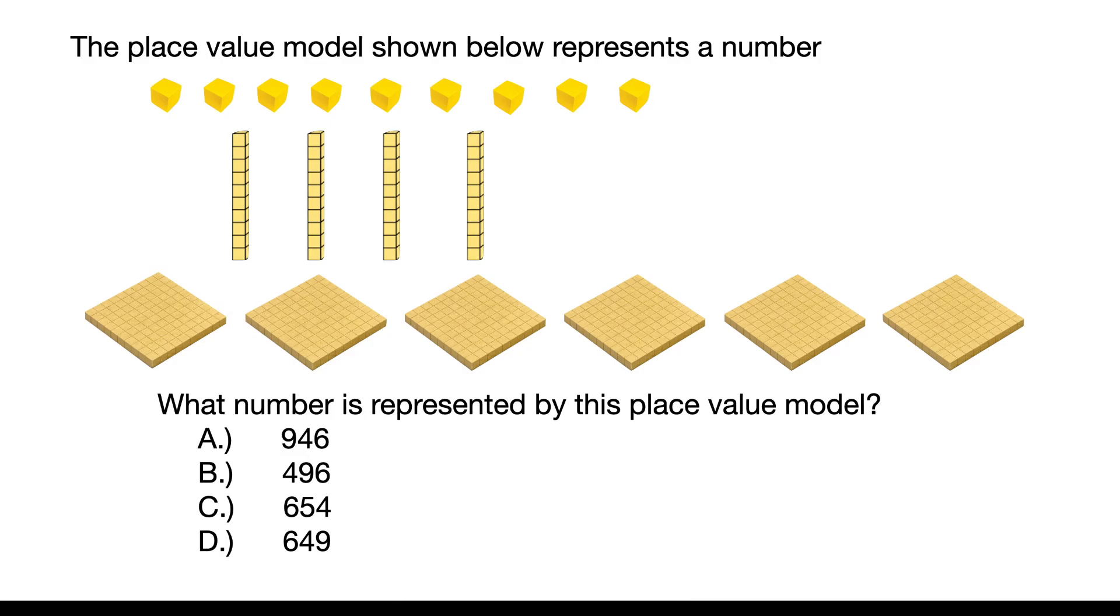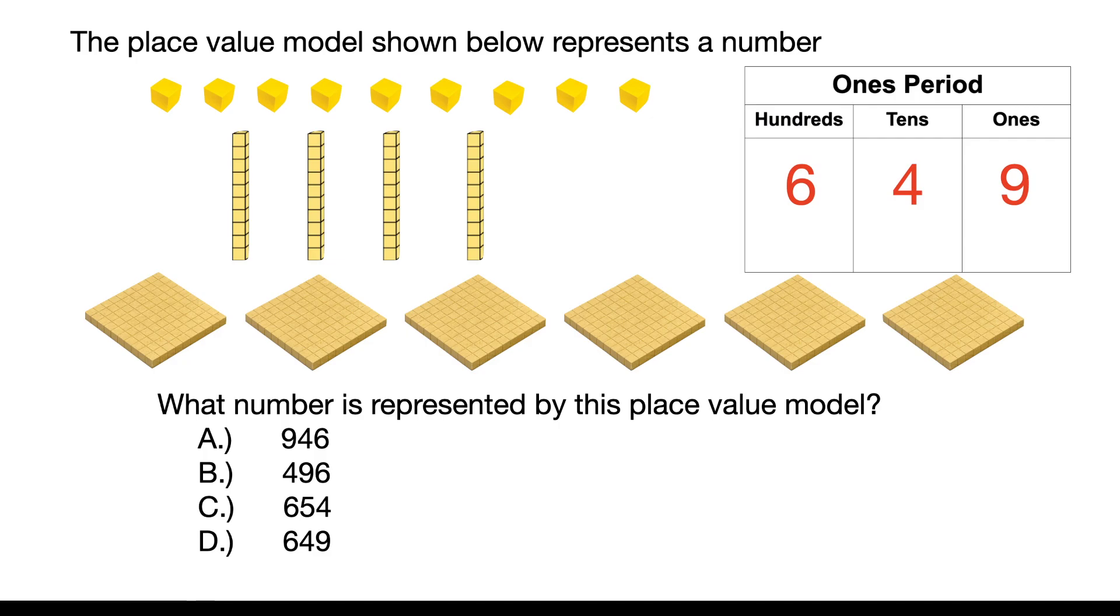The place value model shown below represents a number. So we've got 9 ones, 4 tens, and 6 hundreds, which is represented by this place value model. Just make sure you get your place values lined up correctly, right? It's kind of a scramble, but it would be 649.